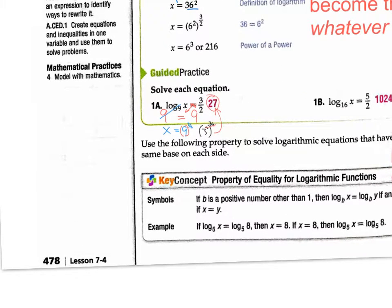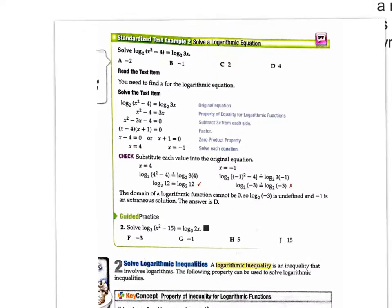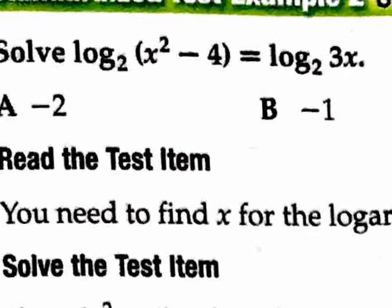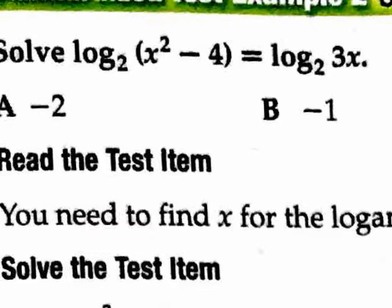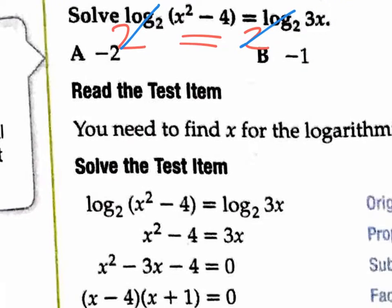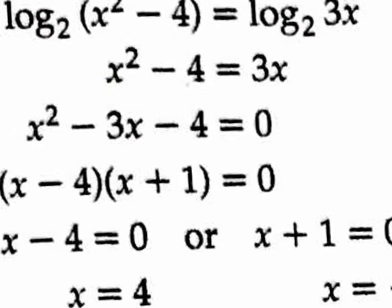Page 479 says: solve log base 2 of x squared minus 4 equals log base 2 of 3x. We want to get rid of the log base 2s on both sides, so we raise them to become powers of base 2. You put a big 2 there and a big 2 on the other side, with an equal sign between the 2s. That way, 2 to the log base 2 cancels out on both sides. After canceling, we have the new equation: x squared minus 4 equals 3x.